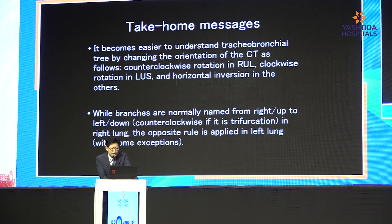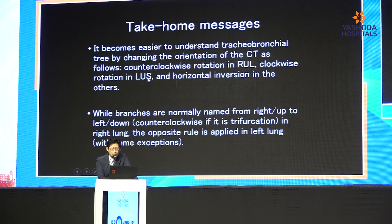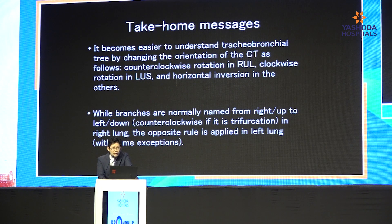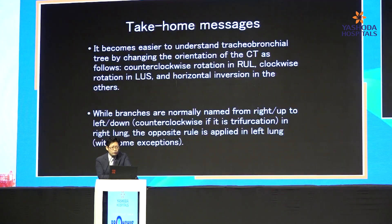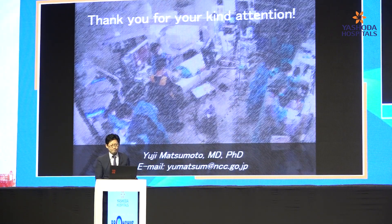So this is the last slide. It becomes easier to understand the bronchial tree by changing the CT orientation as I told you: counterclockwise rotation for the right upper lobe, clockwise rotation for the left upper segment, and for the others, horizontal inversion. The five branches are normally named from right to left, up to down in the right lung. But the opposite rule is applied in the left lung — left to right. And for trifurcation, in the right lung counterclockwise, and in the left lung clockwise. Thank you.